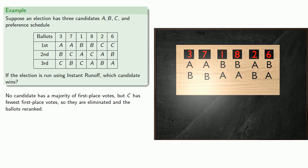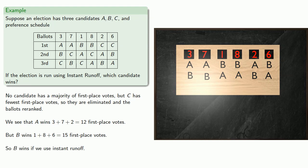And, again, we'll count only the first place votes. If we run that runoff election, then we see that A wins 12 first place votes, and B wins 15 first place votes. And what this means is that B wins if we use instant runoff.